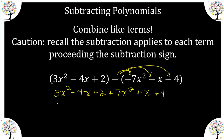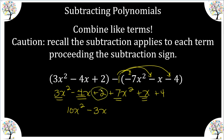Now we can just combine like terms. The quadratic terms give me 10 x squared — you just add your coefficients, you don't change the variable or the exponent. Then my linear terms give me negative three x, and then my constants give me plus six. So we have a quadratic trinomial.